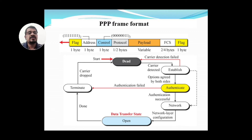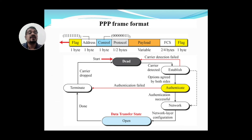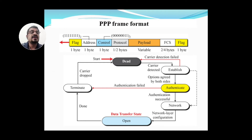If authentication fails, it goes back to the dead state. If authentication is successful, the network is established, meaning your devices are connected to that network. Once the network is established, network layer configuration happens — dynamic IP addresses are configured and assigned to each device. After network layer configuration completes, the data transfer process starts, and once finished, the connection terminates.